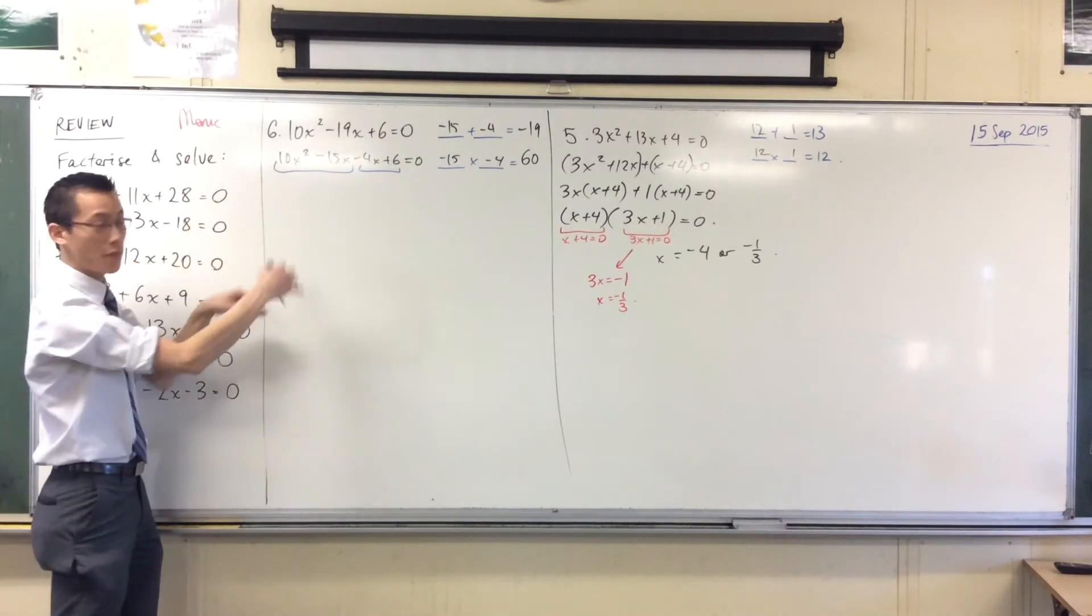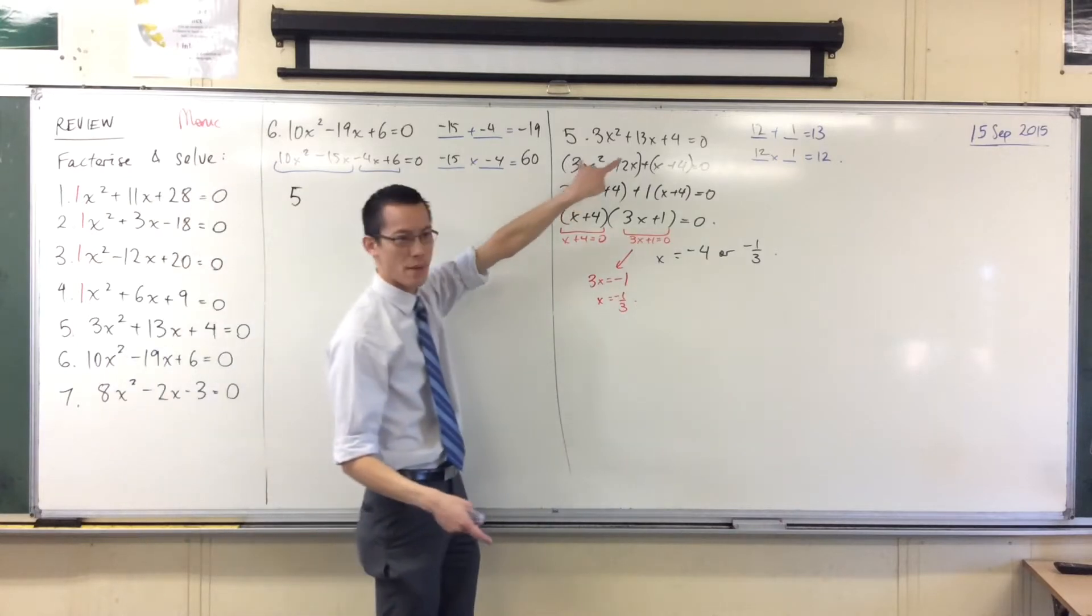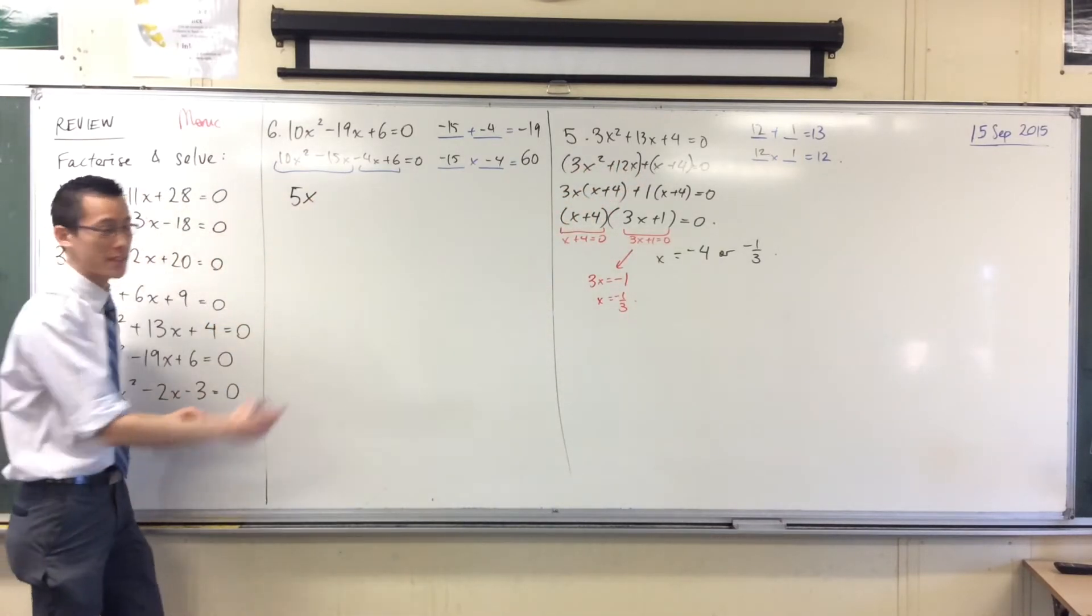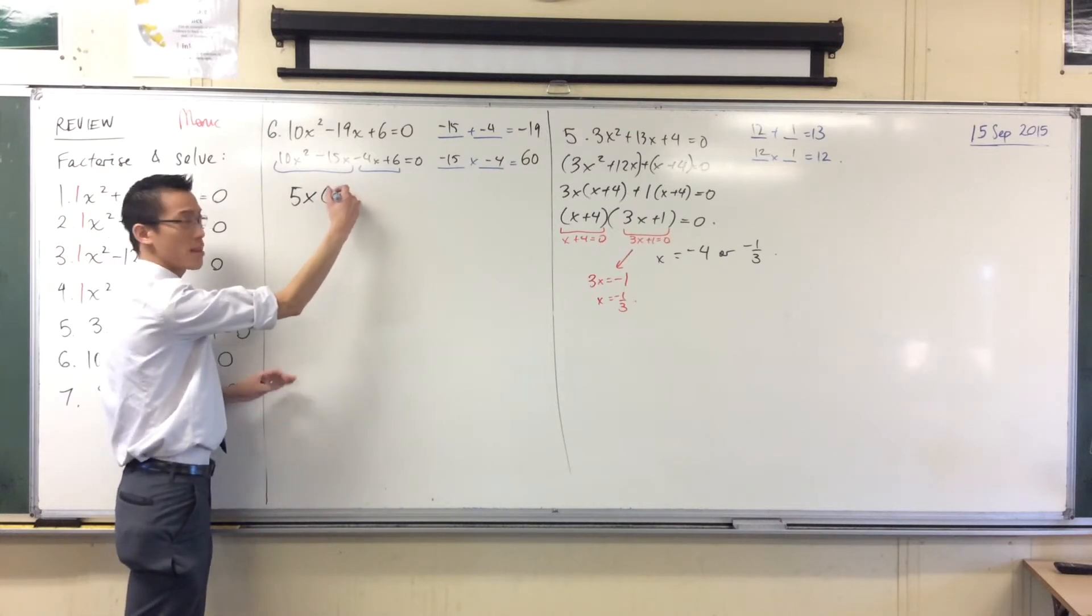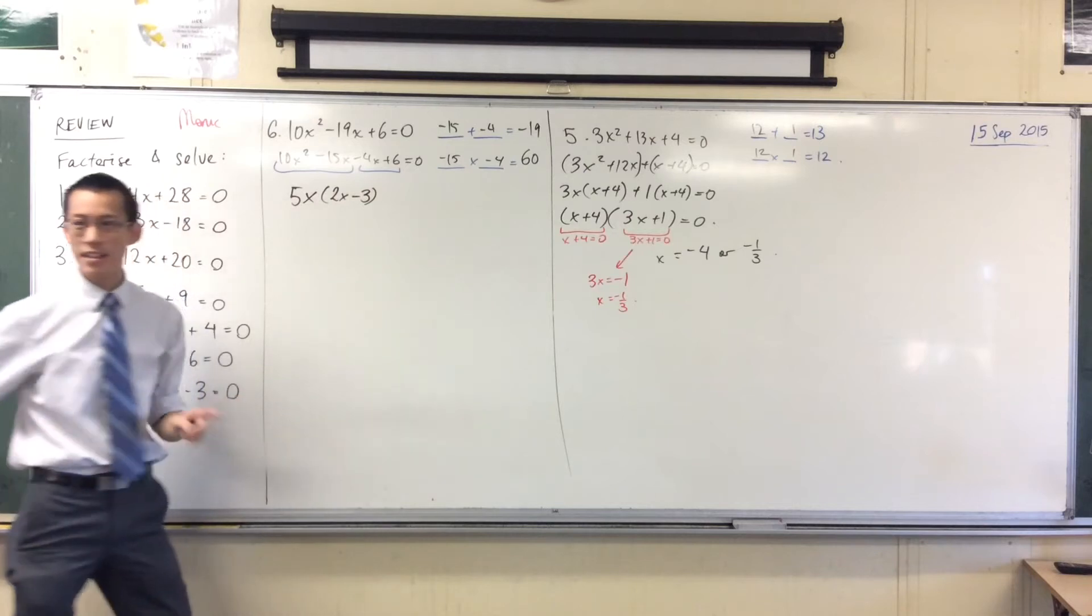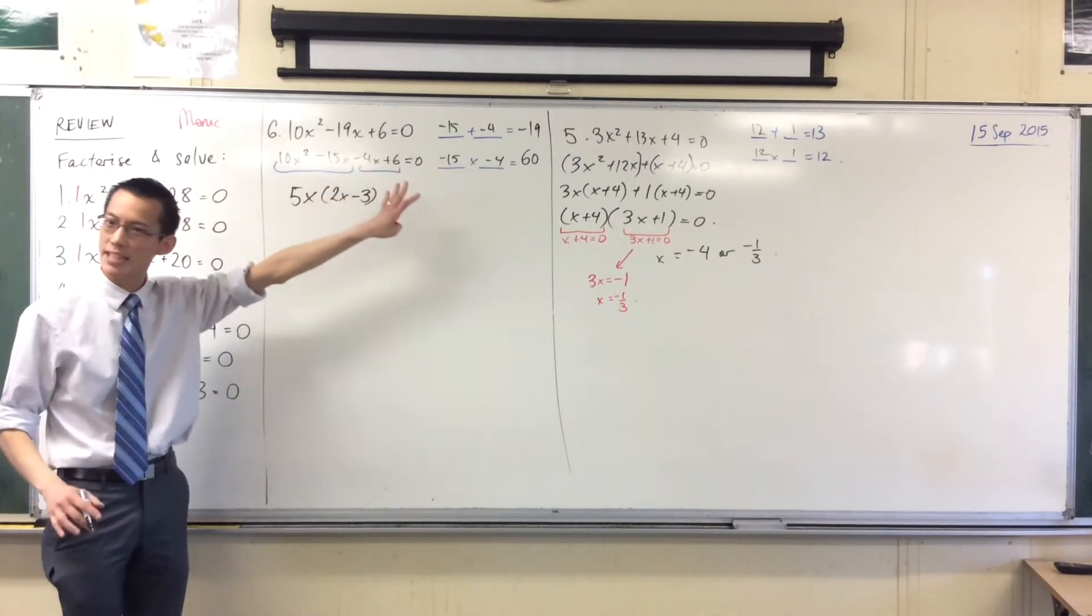I can take out 5x. 10 and 15, they're all going to be 5. And you'll notice this happening over and over again. Because of the way we paired them, you'll always be able to get 1x out of the first pair. So I take my 5x out, which leaves me with 2x take away 3. Now this is promising, because when you look at this, it looks like it's going to work out. What should I take out of the second pair?